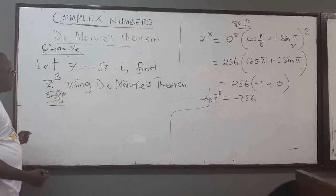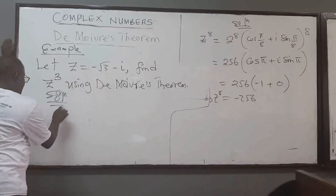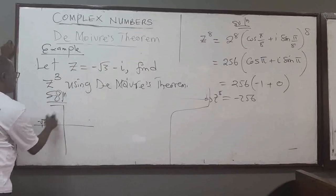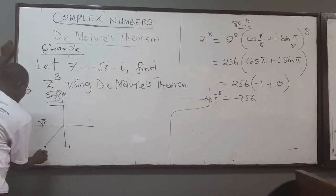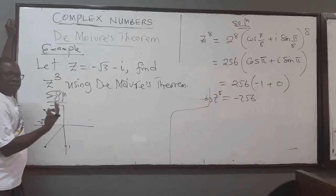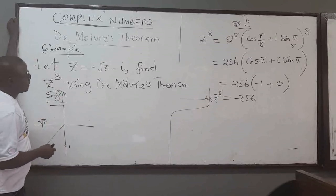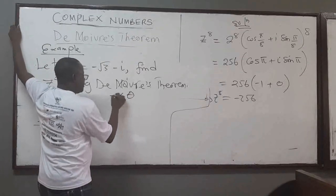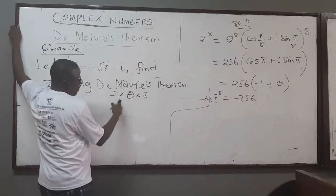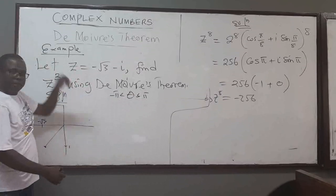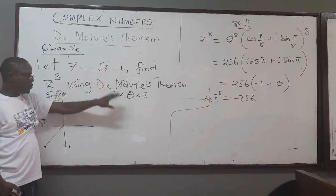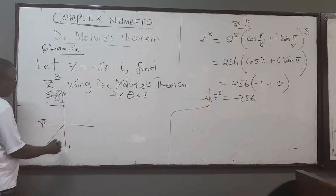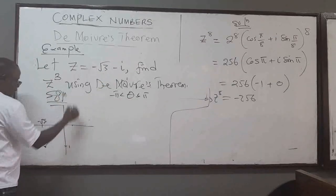Negative root 3 is on the negative real axis and negative 1 is below, so the point is in the third quadrant. We are not given any restriction for theta, so assume that theta lies between negative π and π. The argument we want will be this angle in the third quadrant.